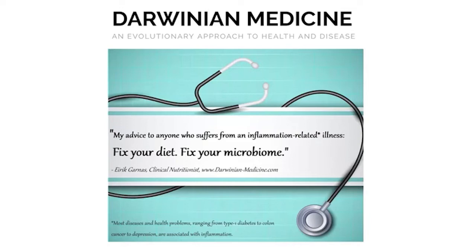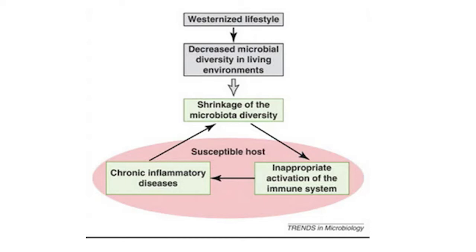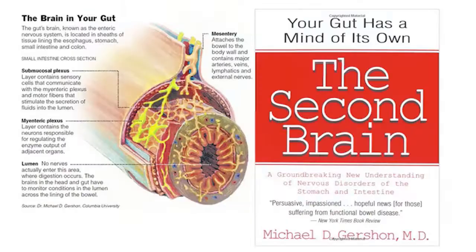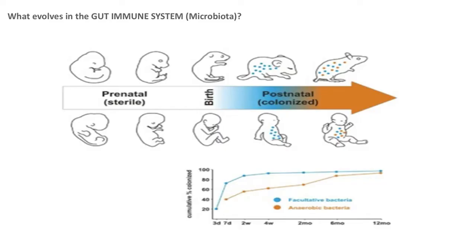We now know that the gut is actually the largest immune system of the body. When I was in medical school, it was the bone marrow. Now we know it's the gut because it is the gut bacteria that's actually teaching what's foreign and not foreign. There are case reports where children born by cesarean section have a lot more allergies and immune problems because there's improper activation of their immune system.